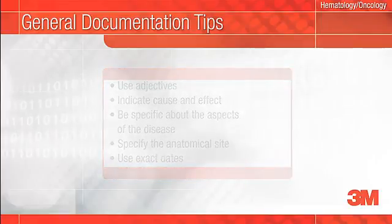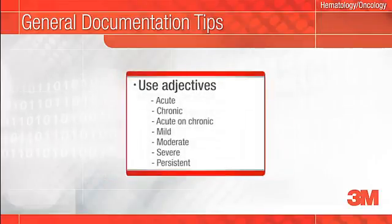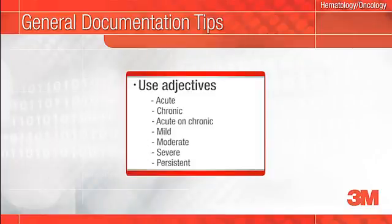A little more on each of these. Differentiate in your notes whether or not a condition is acute, chronic, or acute on chronic whenever appropriate. For example, write acute on chronic graft versus host disease instead of graft versus host disease.